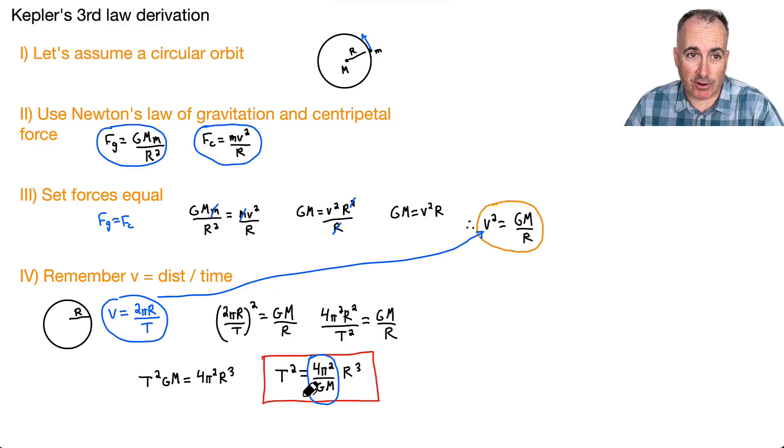The key steps are this: First, assume it's circular. Use Newton's law of gravitation equals the centripetal force. Do some magic, but don't forget to do something about your v—it's distance over time, so circumference over the period. Then just do a little bit of algebra, and you end up with T squared equals something times R cubed. There you go. You're done.